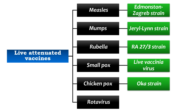For rotavirus, live attenuated vaccines are also available. Two brands are available: Rotavac and Rotarix. Rotavac is manufactured by Bharat Biotech in India and given in three doses. Rotarix is given in two doses.